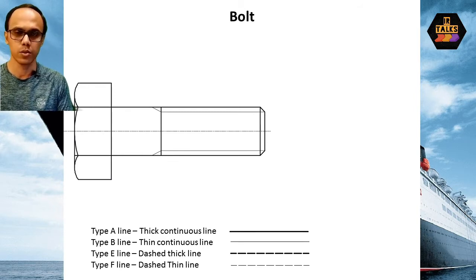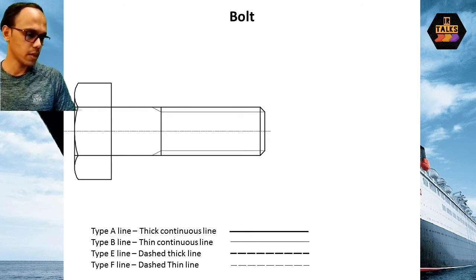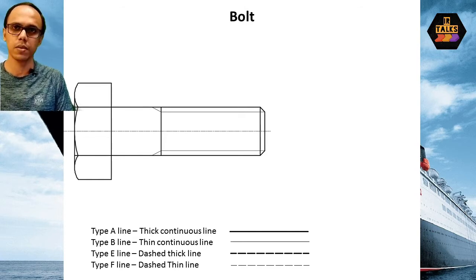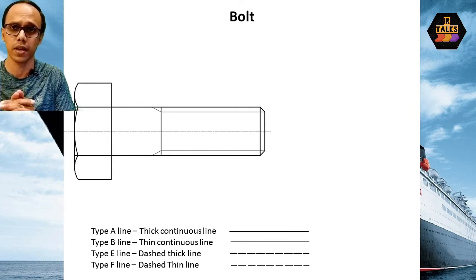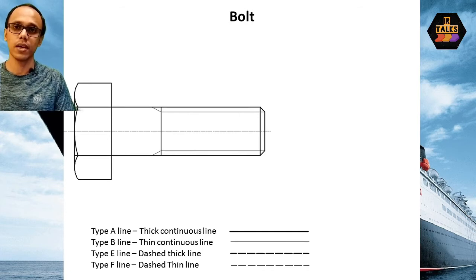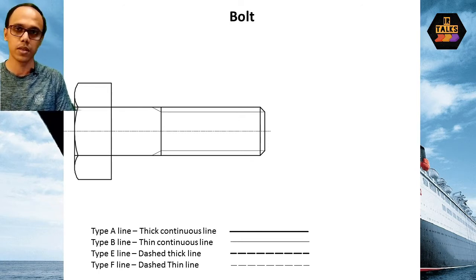What type of line is needed? We use four types of lines: type A line, type B line, type E line, and type F line. Type E line and type F line — you can read specifically E or F line. Type A line is a thick continuous line. Type B line is a thin continuous line. Then type E line is a thick dashed line, and type F line is a thin dashed line. The first type line is used in this figure.